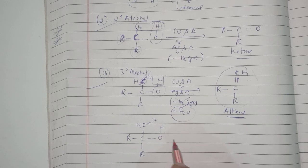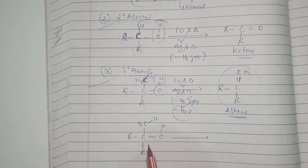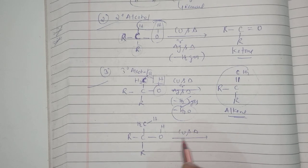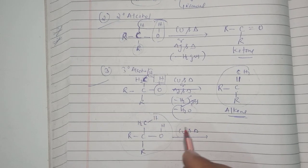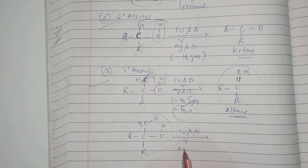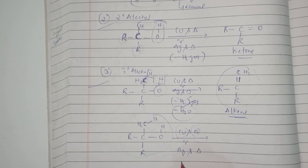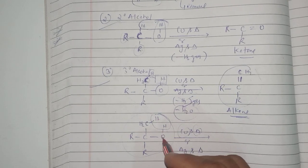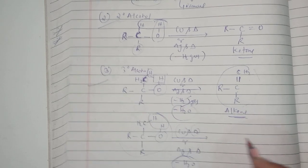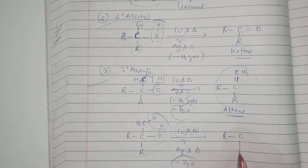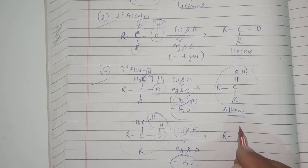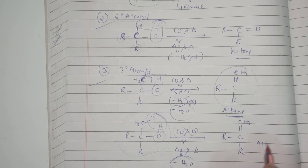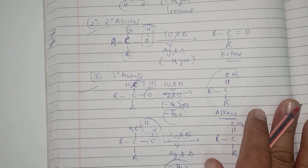When the three-degree alcohol is treated with copper under heating condition, or passed over silver under heating condition, there is removal of a water molecule — two hydrogen atoms and one oxygen — leading finally to the formation of R-C(R) double bond CH2, which is your alkene.